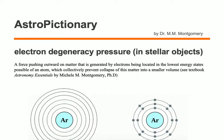Electron degeneracy pressure in stellar objects is a force pushing outward on matter that is generated by electrons being located in the lowest energy states possible of an atom, which collectively prevent the collapse of this matter into a smaller volume.